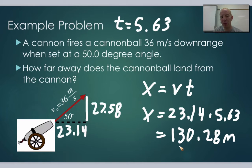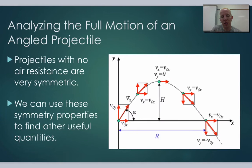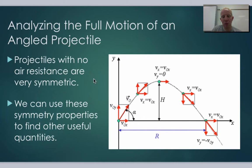Let's do one more example involving a fortunate phenomenon: projectile trajectories are very symmetric. When we launch something with no air resistance, there's a lot we can figure out just by symmetry.